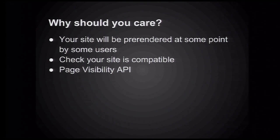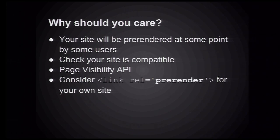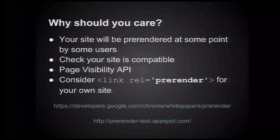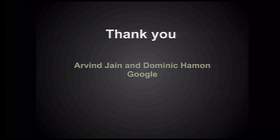So why should you care? Quite simply, your site is going to be pre-rendered at some point by some users. You probably want to check that your site is compatible. If you're following the spec, that's not going to be a problem — we've taken great pains to make sure that we don't break the Internet. But if you're off-spec at any point, you just might want to check. We introduced the Page Visibility API, which allows you to know when you're pre-rendering so that you can act accordingly. You might want to consider this for your own site — if you know your users' flow through your site, you might want to consider providing a hint to Chrome to start pre-rendering. There are links to the white paper for pre-rendering and an application that will pre-render your site and allow you to test it. Thank you very much. I've been Dominic Hammond, Arvind Jain from Google.